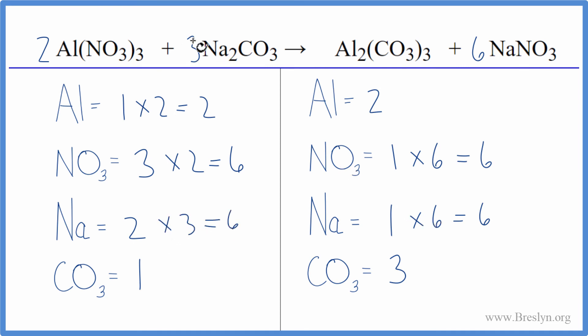So those are balanced, and this three, it applies to everything. So we have the one carbonate times the three. That gives us three carbonate ions, and we're done. And this equation is balanced.